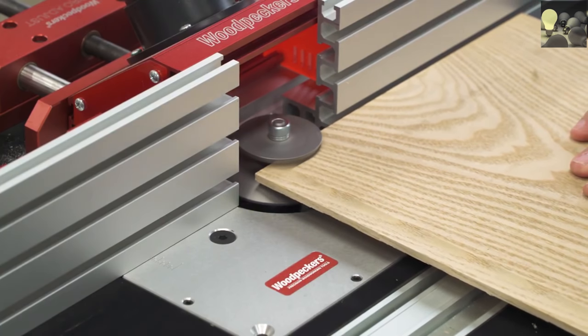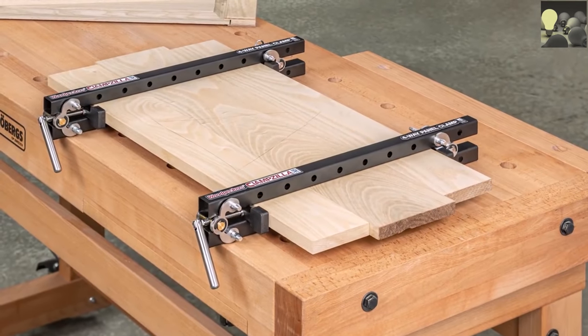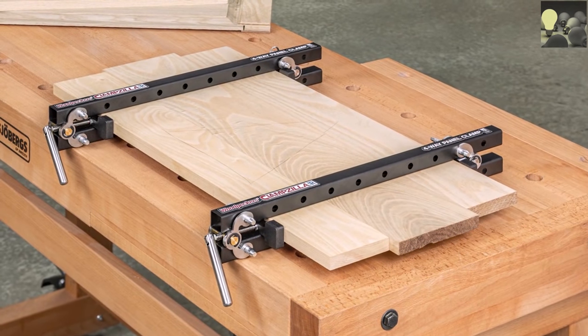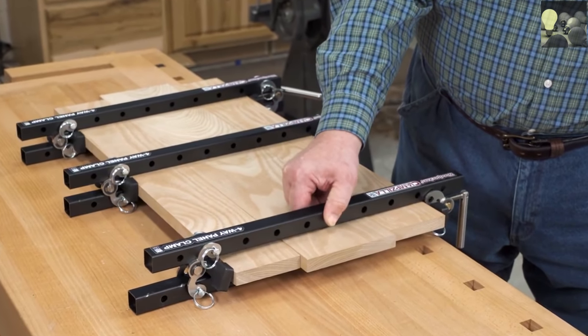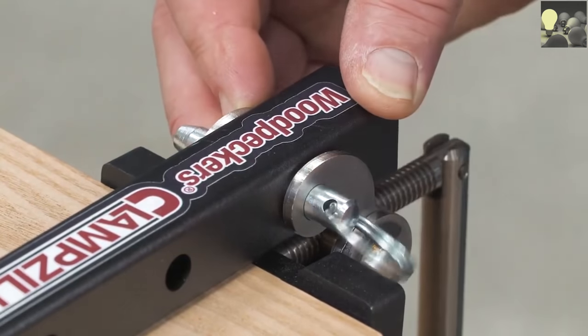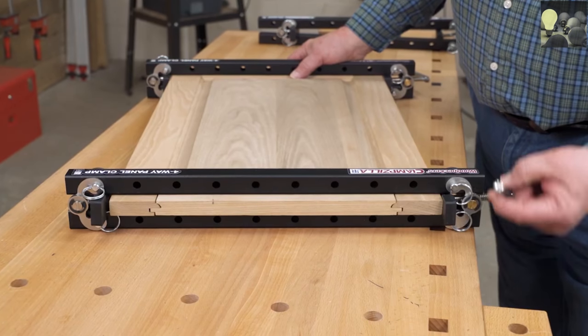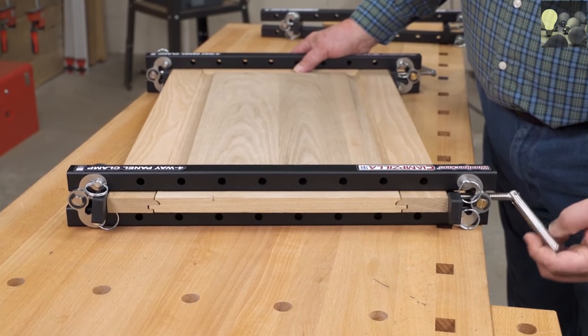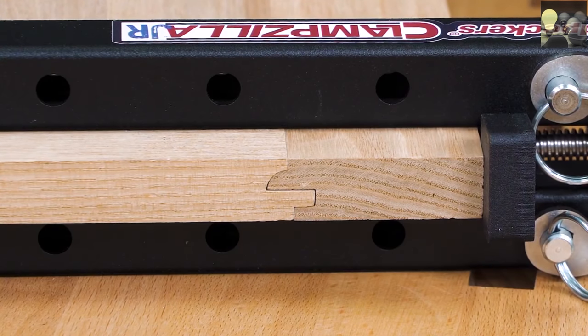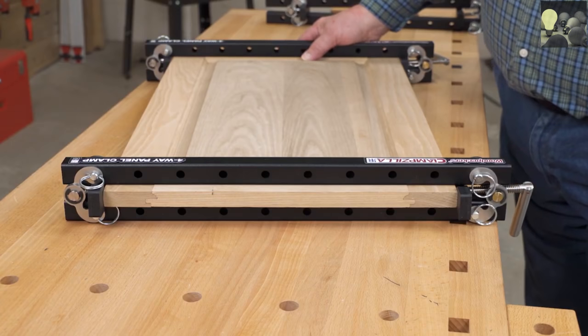Clampzilla Jr. is perfect for building raised panel cabinet doors. First, for gluing up the panels, it's just the right size. There's not an extra foot or two of clamp always trying to punch you right in the belly. And your panels come out needing very little sanding. Then, when it's time to assemble the door, the size is just right again. And the four-way pressure makes sure the cope and stick joint doesn't rack when you clamp it up.